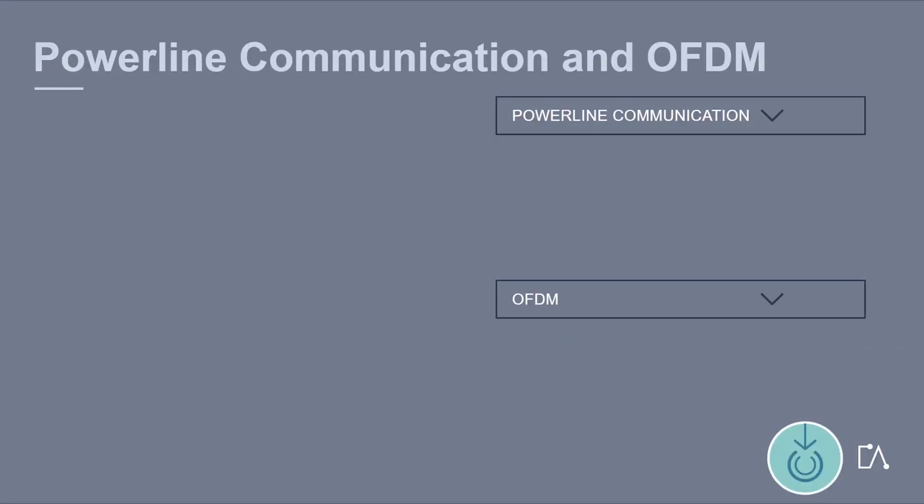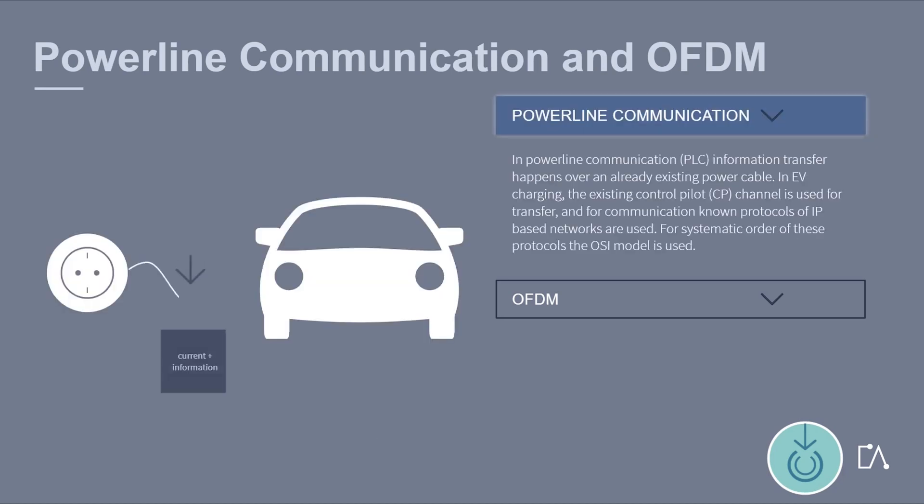In high-level communication according to ISO 15118, the message transfer is based on powerline communication specified by HomePlug GreenPHY, which in turn is based on OFDM. In powerline communication, information transfer happens over an already existing power cable.